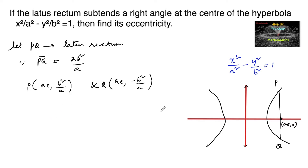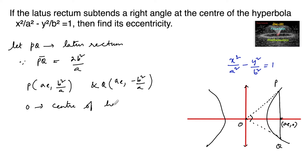O is the center of the hyperbola at origin (0, 0). It is given that the latus rectum subtends a right angle at the center of the hyperbola, which means angle POQ equals 90 degrees, or π/2.